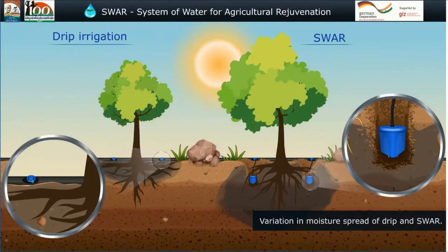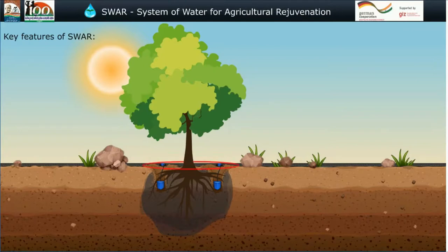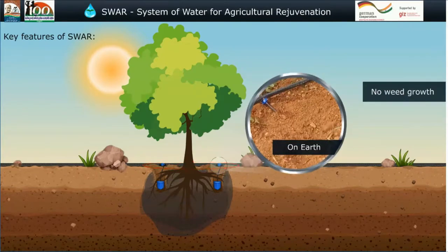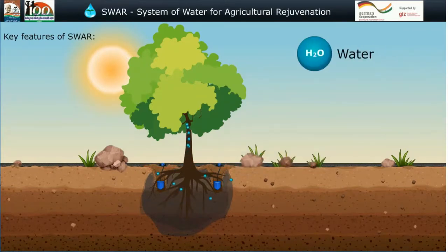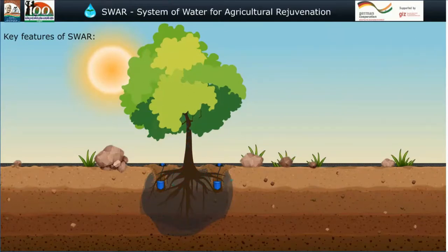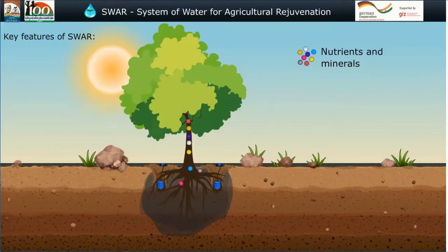The variation in moisture spread between drip and SWAR is a key differentiator. Key features of SWAR include no weed growth, capillary moisture spread, and strong plant roots. The SWAR approach focuses on moisture at the root zone and microbes in the soil to maximize plant growth and yield.